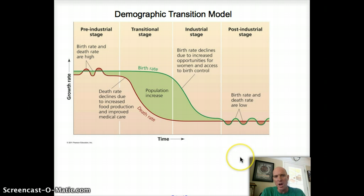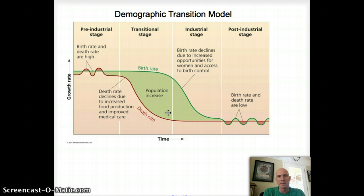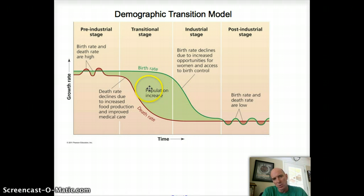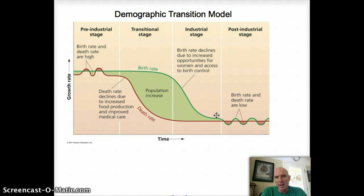If you wanted to help another country alleviate their population pressures, this is how you do it. Countries in the transitional stage right now include Kenya, Egypt, Bangladesh, and India, where you've got fast-growing populations. So how do we get them through the transitional and industrial stages to increase access to education and healthcare so their birth rates fall? That would be a very humanitarian effort worth putting energy into.